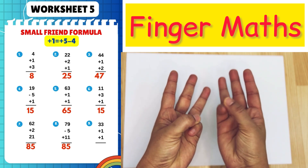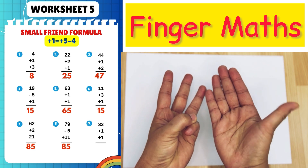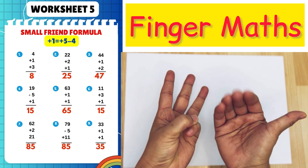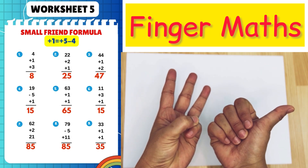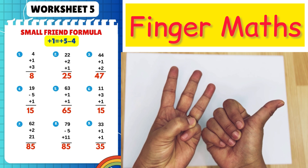33 plus 1 plus 1, plus 5 minus 4. Answer is 35.